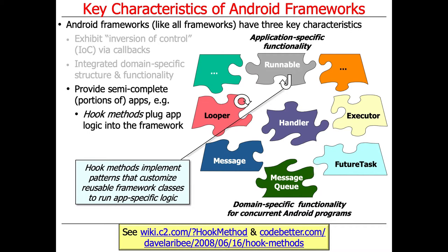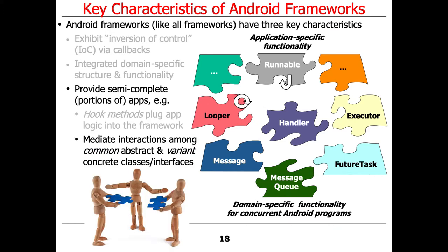A hook method is a very important concept in a framework. You can think of a hook method mostly as a virtual method that can be overridden or must be overridden by subclasses or implementations in order to provide app-specific behavior. The framework mediates interactions among the common portions — the abstract classes or superclasses that provide integrated domain-specific functionality — and allows application developers to customize and extend things to handle variant capability specific to that particular application. That's where the business logic comes in, but everything else can be reused.